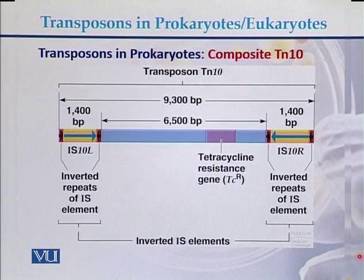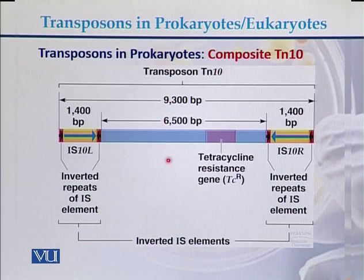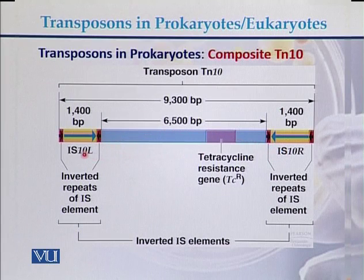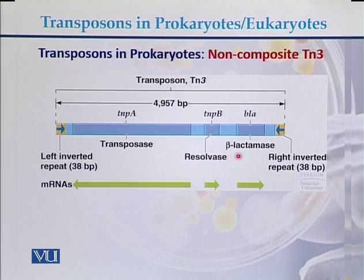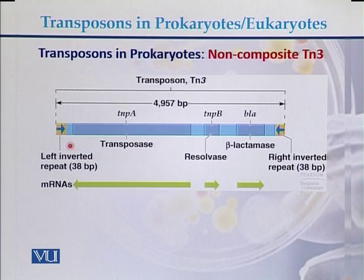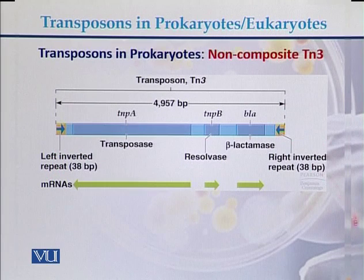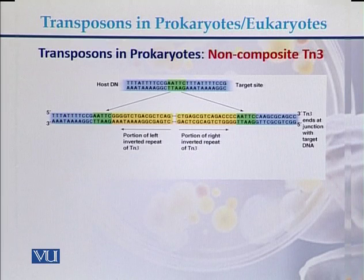An example of a composite transposon is Tn10. It contains a gene for tetracycline resistance with IS elements on both ends. An example of a non-composite transposon is Tn3, which carries additional genes including beta-lactamase, resolvase, and transposase. On both sides of Tn3 there are inverted repeats but no IS elements.